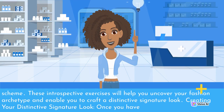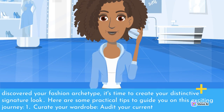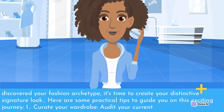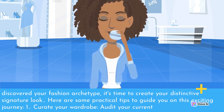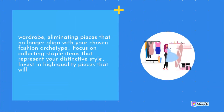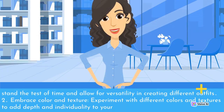Creating your distinctive signature look. Once you have discovered your fashion archetype, it's time to create your distinctive signature look. Tip 1: Curate your wardrobe. Audit your current wardrobe, eliminating pieces that no longer align with your chosen fashion archetype. Focus on collecting staple items that represent your distinctive style. Invest in high-quality pieces that will stand the test of time and allow for versatility in creating different outfits.